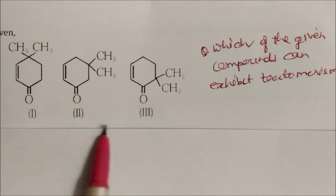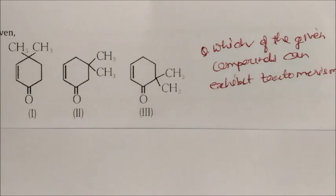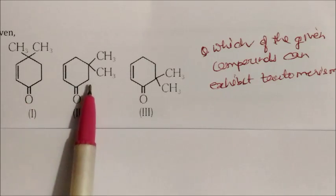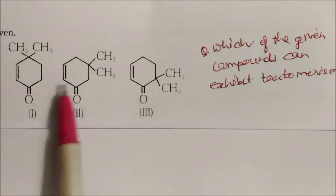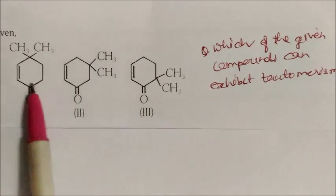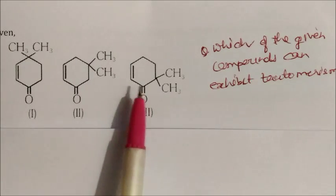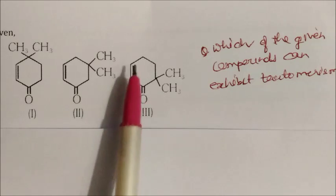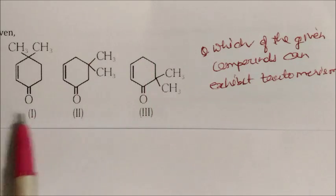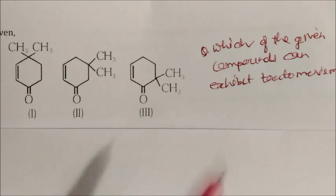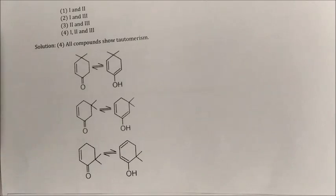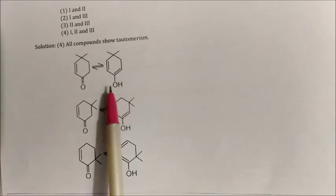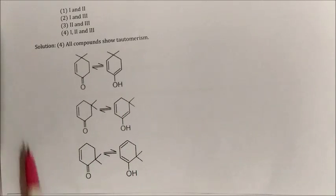Question: Given three compounds, which can exhibit tautomerism? Tautomerism requires an alpha hydrogen adjacent to an electronegative atom (like C=O or C=N). Compound 1 has an electronegative atom and alpha hydrogen. Compound 2 shows conjugation with alpha hydrogen. Compound 3 also has alpha hydrogen with conjugated bonds. All three can exhibit tautomerism, showing enol-keto tautomeric forms. Answer: option 4, all three compounds.